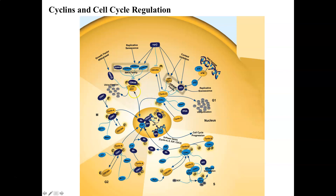The cyclin proteins activate cyclin-dependent kinases — notice the phosphates associated with them — and those cyclin-dependent kinases transfer energy to other proteins within the cell so they can do work for that particular phase. We see this in G1, in the S phase with cyclin interacting with CDKs and phosphate transfer, and in G2 with cyclin interacting again with a CDK as a phosphorylator.